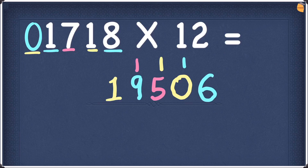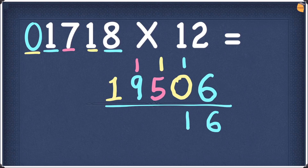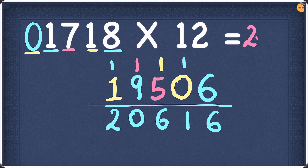Let's add this number up. 6 plus nothing is 6. 1 plus 0 is 1. 5 plus 1 is 6. 9 plus 1 is 10 — write the 0 and take the 1 as a carry. 1 plus 1 is 2. So the answer is 20616.